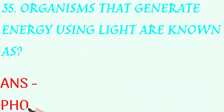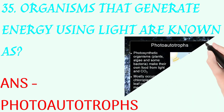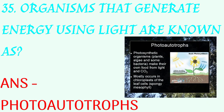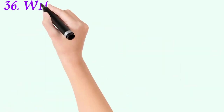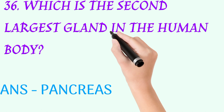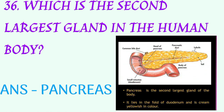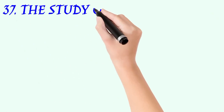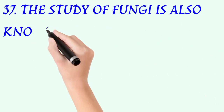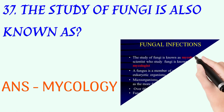Organisms that generate energy using light are known as? Answer: photo-autotrophs. Which is the second largest gland in the human body? Answer: pancreas. The study of fungi is also known as? Answer: mycology.